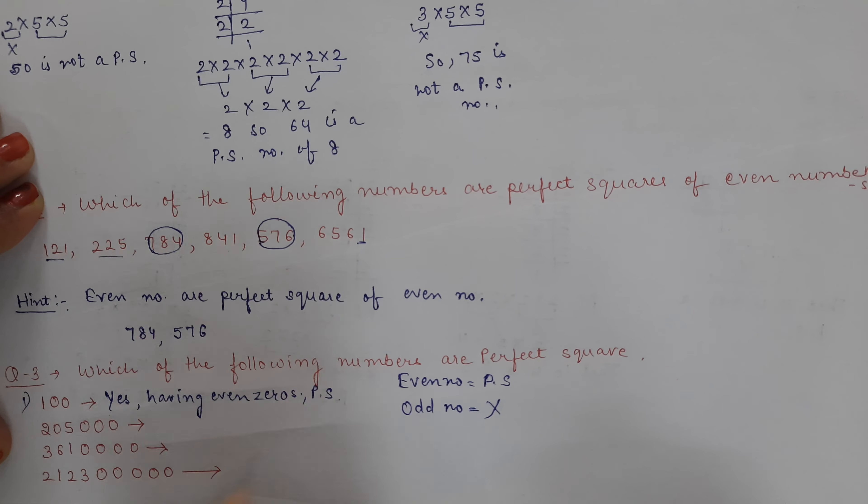Next question: 2050000 with three zeros. Odd number of zeros. Having odd zeros, so it is not a perfect square.